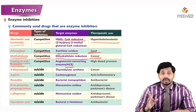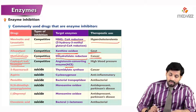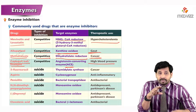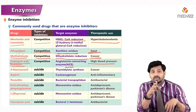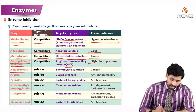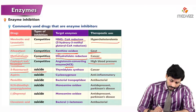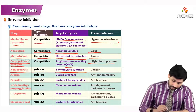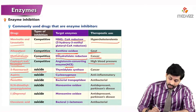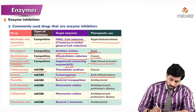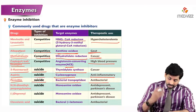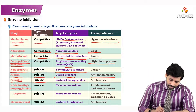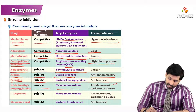Captopril and enalapril are competitive inhibitors of angiotensin converting enzyme (ACE inhibitors) used for controlling high blood pressure. 5-Fluorouracil is a suicide inhibitor and anti-cancer drug targeting thymidylate synthase. Aspirin is a suicide inhibitor targeting cyclooxygenase as an anti-inflammatory drug. Penicillin targets bacterial transpeptidase as a suicide inhibitor antibacterial agent.